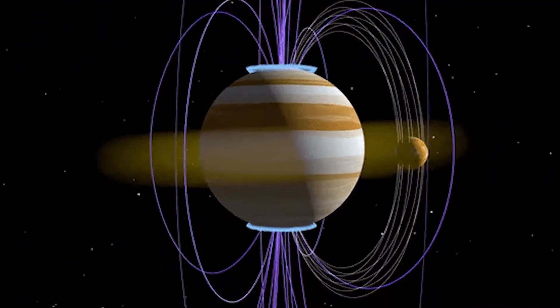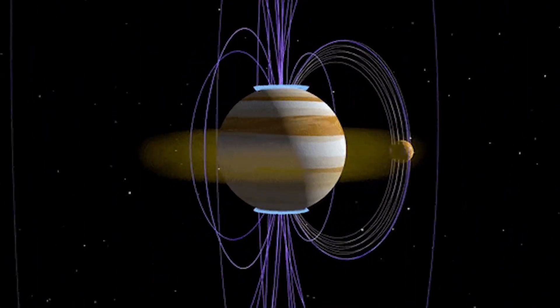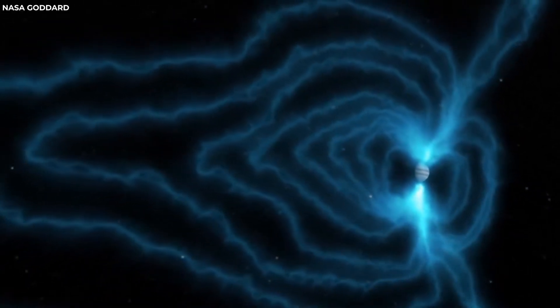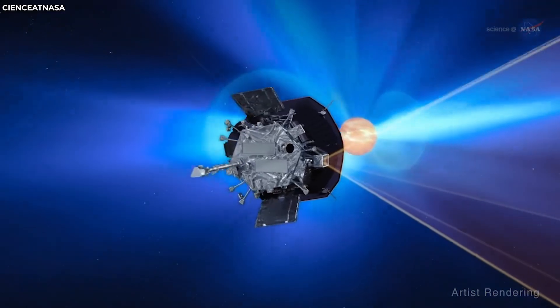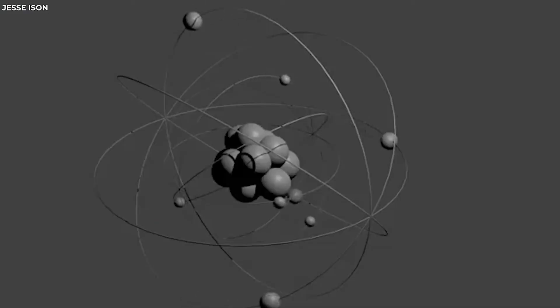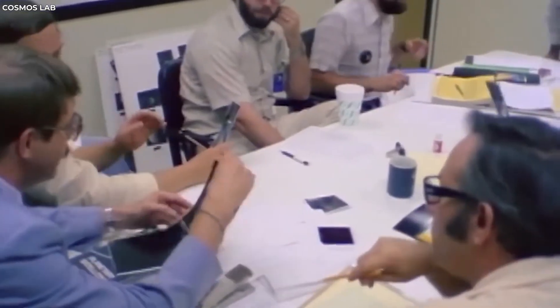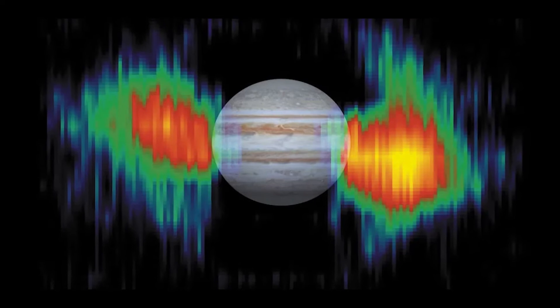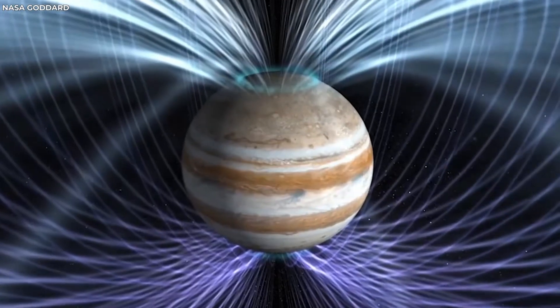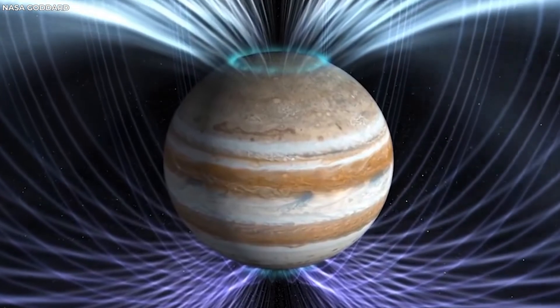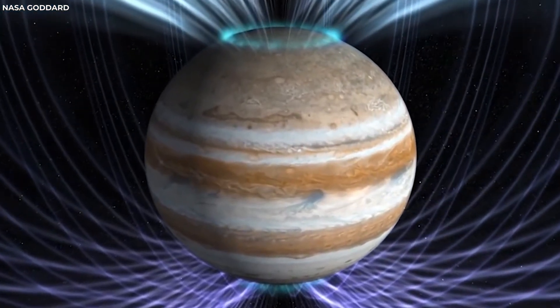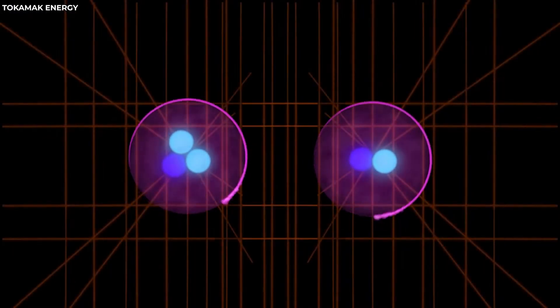Voyager 1 measured the intense radiation belts around Jupiter, which are generated by the planet's powerful magnetic field and its interaction with the solar wind. The radiation belts are composed of energetic electrons and protons that can damage spacecraft and pose a hazard for future missions. Voyager 1 detected lightning and auroras in Jupiter's atmosphere, as well as radio emissions that vary with the planet's rotation.